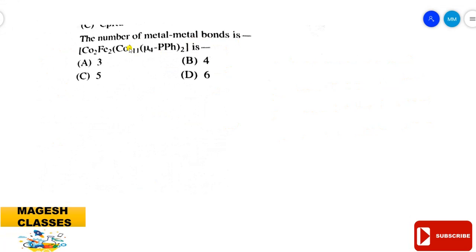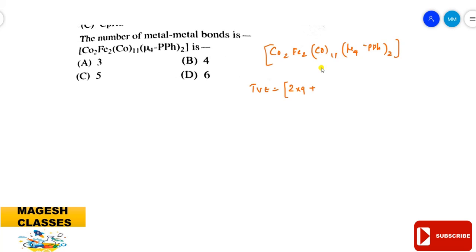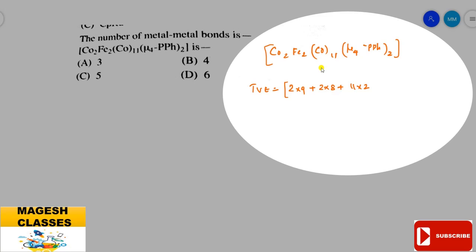Next question: find the number of metal-metal bonds present in a cobalt-iron carbonyl complex. To find metal-metal bonds, we calculate the total valence electrons (A). Cobalt is a d9 system: 2 × 9 = 18. Iron is a d6 system: 2 × 8 = 16. With 11 carbonyls (11 × 2 = 22) and bridging ligands (2 × 4 = 8), A = 64.